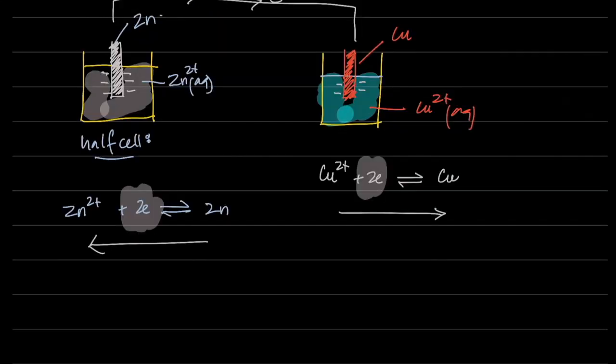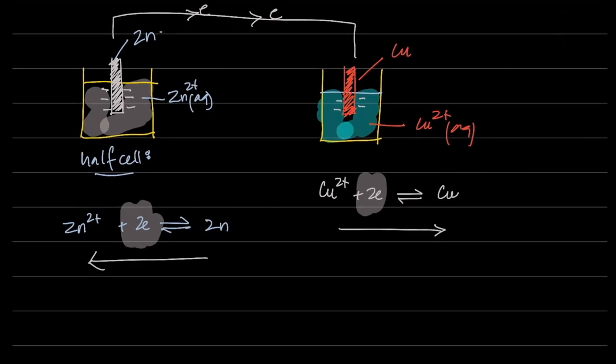Now we're going to start the next thing. The two things to focus on: first, individual half cells are an equilibrium between two oxidation states. Second, when we connect two half cells they become a full cell and current flows because there's a potential difference — meaning one half cell had more electrons on its rod than the other. Let me show you a diagram of this.